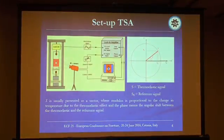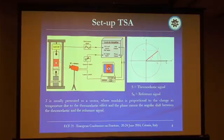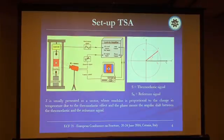A typical thermo-elastic stress analysis setup includes a loading machine, an infrared camera, and a lock-in amplifier. The signal from the loading machine and the signal from the detector are analysed by the lock-in amplifier, giving outputs of amplitude and phase signals. The thermo-elastic signal from the infrared camera is usually presented as a vector, where the modulus is proportional to the change in temperature due to the thermo-elastic effect, and the phase represents the angular shift between the thermo-elastic and the reference signal from the loading machine.